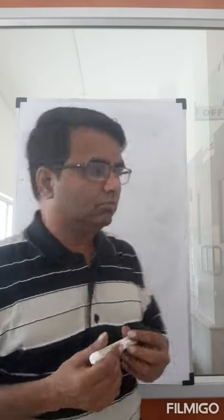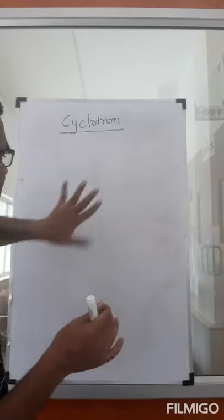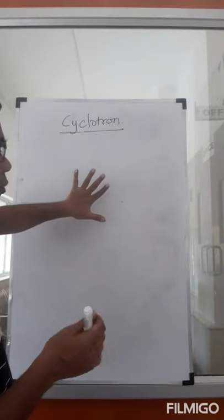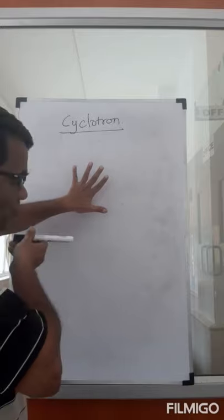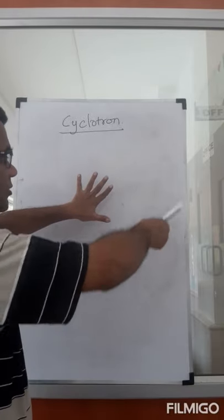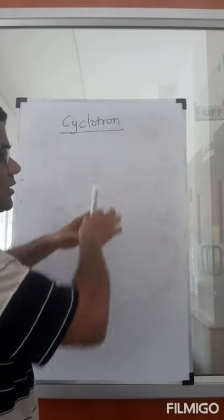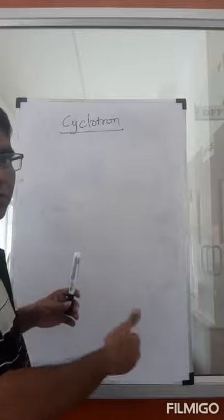Suppose there is a magnetic field and there is a charge moving perpendicular to that field. Then what is going to happen? The charge will make a circle. That is what we saw. If the field is going into the board and if the charge is moving in this direction, then it is going to make a circle.